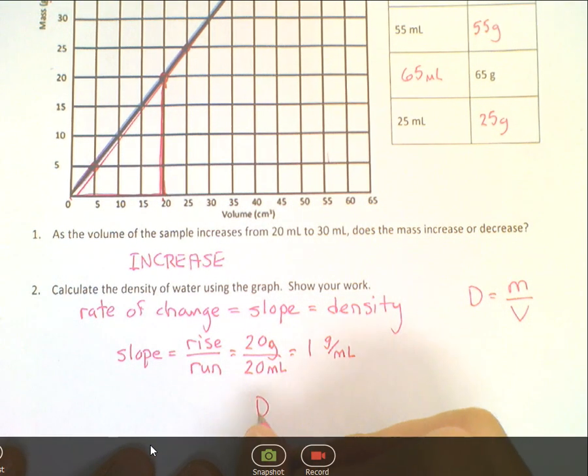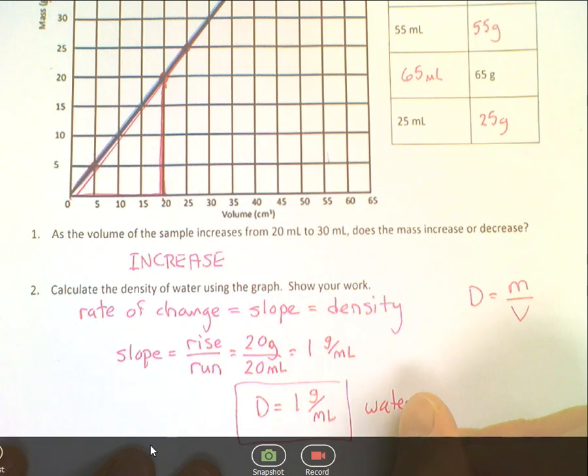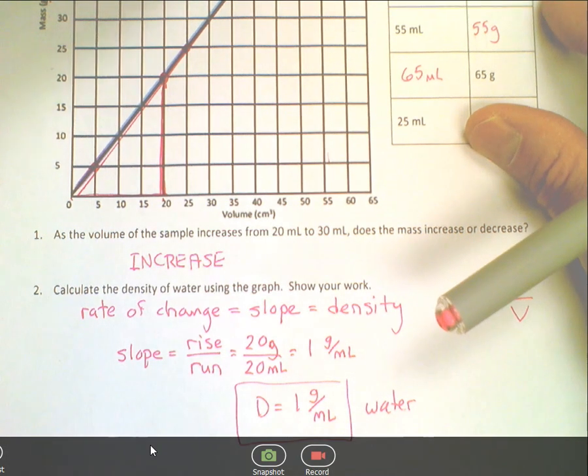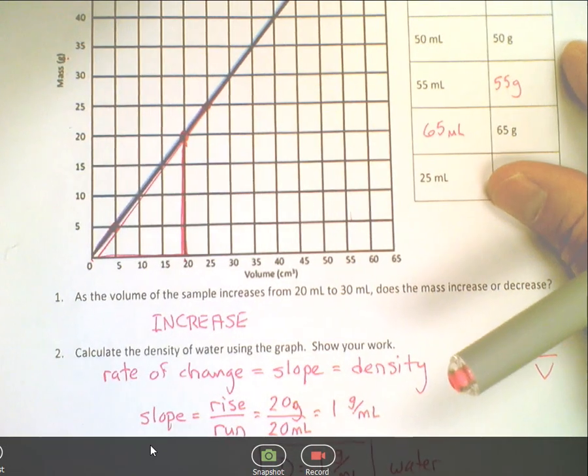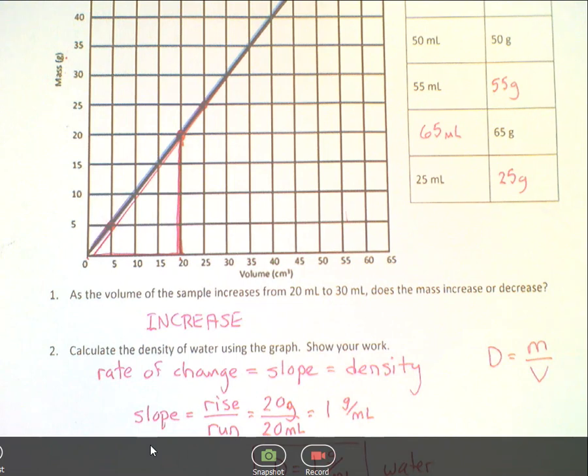20 over 20 is 1 gram per milliliter. Now, since the slope is the density, we know that the density is 1 gram per milliliter. And this is for water. This could have worked from any position that we took the slope or found the rate of change. We could have picked any numbers that we wanted. I'll show you an example.